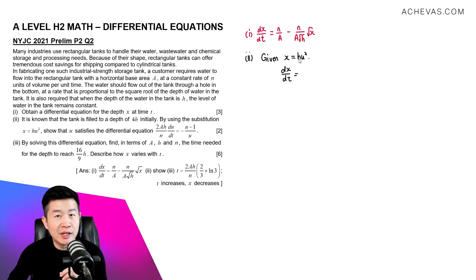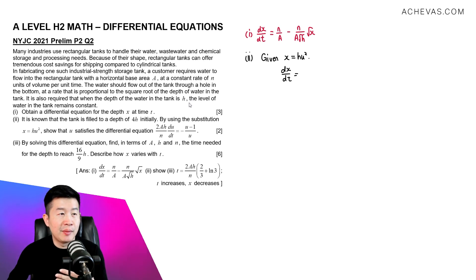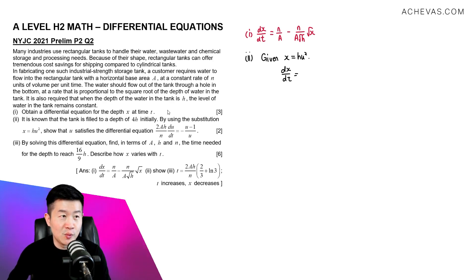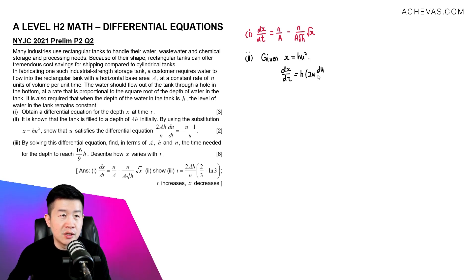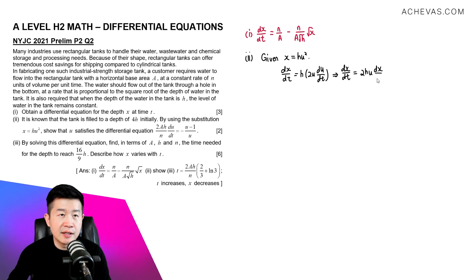Note that h here is a constant, because according to the question the water level becomes h and remains at that value with dx/dt = 0. So when differentiating x = hu² with respect to t, h is unaffected and we just differentiate u²: this gives dx/dt = 2hu du/dt.